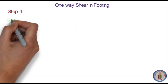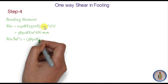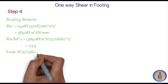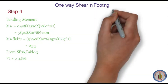In the next step we find the bending moment, because we need the design shear strength of concrete to compare with the nominal shear stress. The bending moment Mu = Qu × B × 1060² / 2, giving Mu = 589.08 × 10⁶ N·mm. From this, Mu/(B×d²) = 0.515. Using SP16 Table 3 with this value, we get the percentage of steel PT = 0.146.